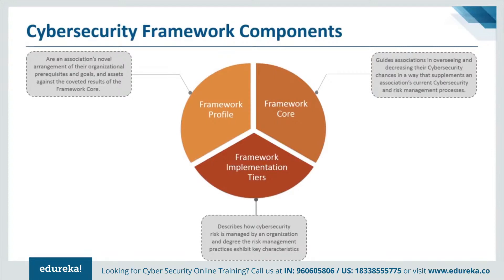The framework implementation tiers assist an organization by providing context on how it views cybersecurity risk management. The tiers guide organizations to consider the appropriate level of rigor for their cybersecurity program and are often used as a communication tool to discuss risk appetite, mission priority, and budget. The framework profiles are an organization's unique alignment of their organizational requirements and objectives, risk appetite, and resources against the desired outcomes of the framework core.